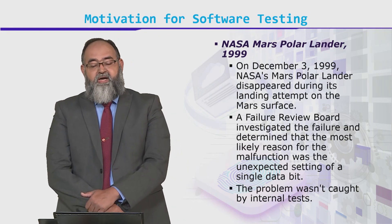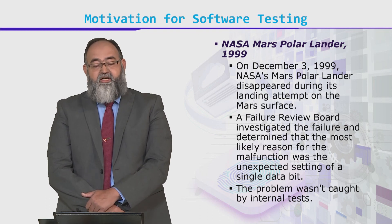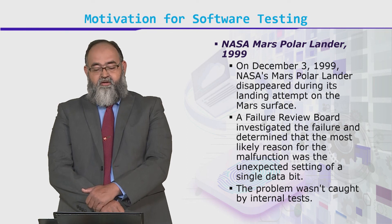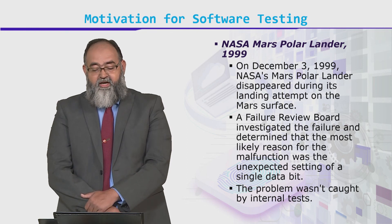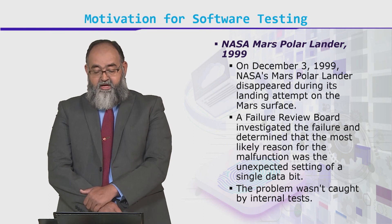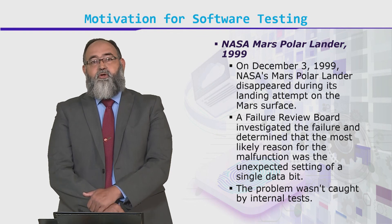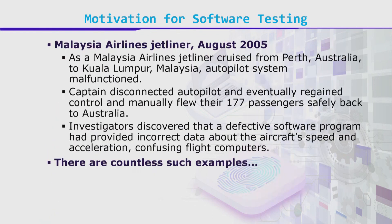NASA's Mars Polar Lander in 1999 disappeared during its landing. A Failure Review Board investigated and found a little malfunction, which was due to a software error.